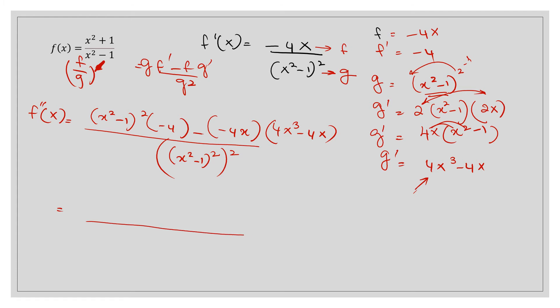In the denominator, power to a power means we multiply: (x squared minus 1) squared raised to the power 2 gives (x squared minus 1) to the power 4. For the numerator, note that (x squared minus 1) squared must be expanded using the a minus b whole squared formula, which gives a squared minus 2ab plus b squared — not just multiplied by negative 4 directly.